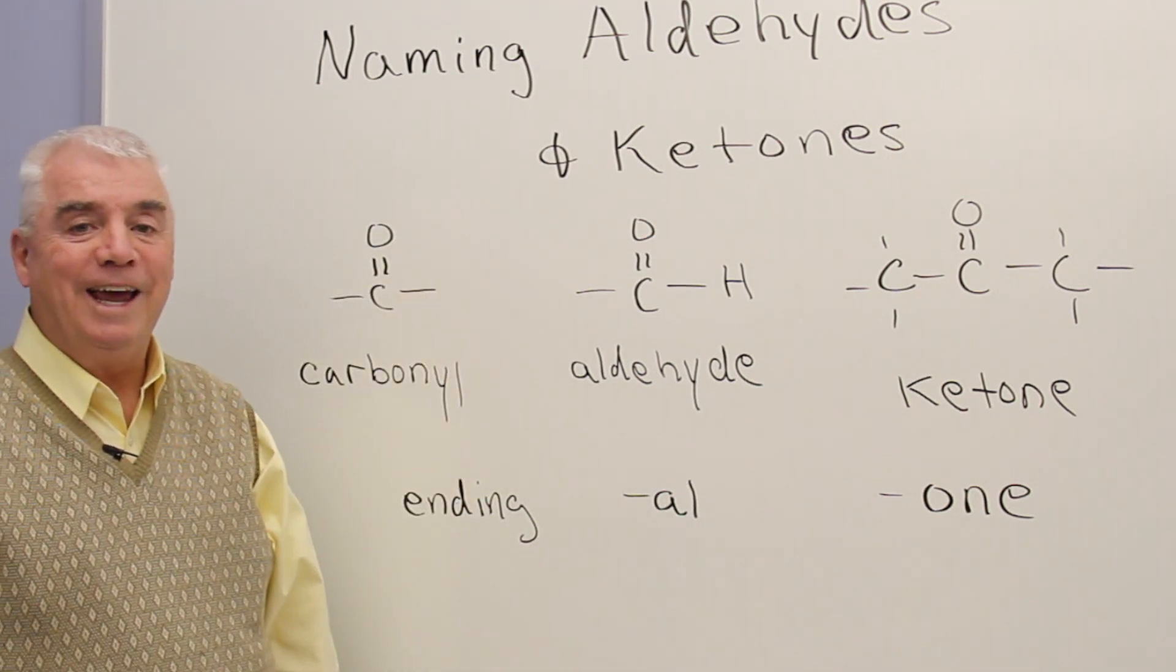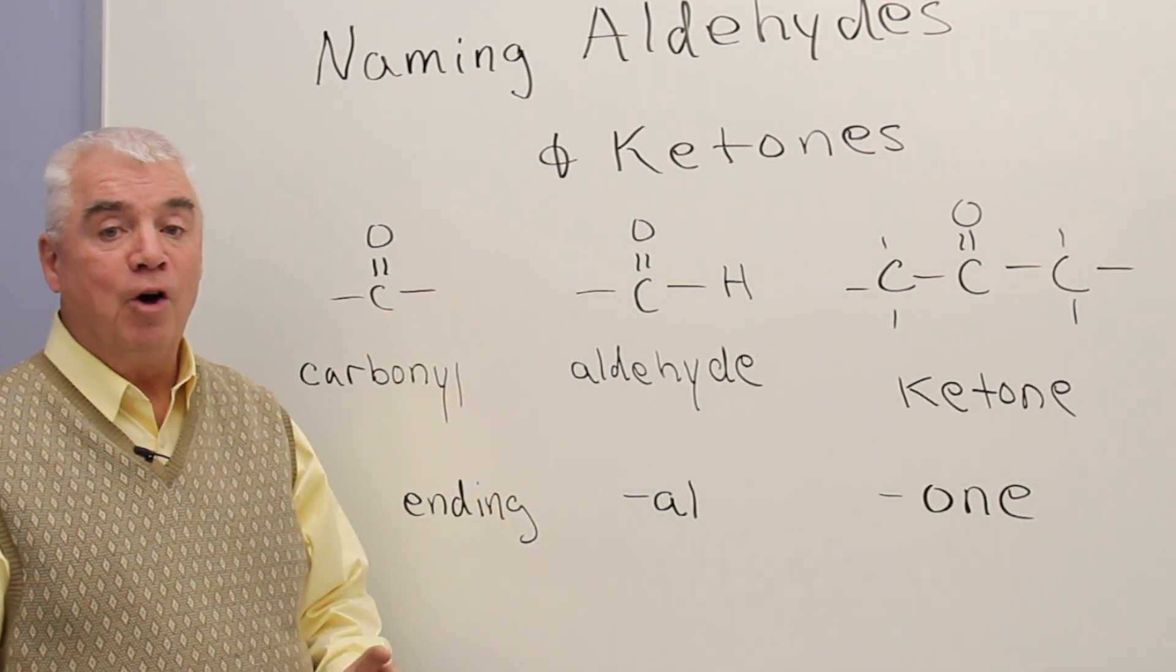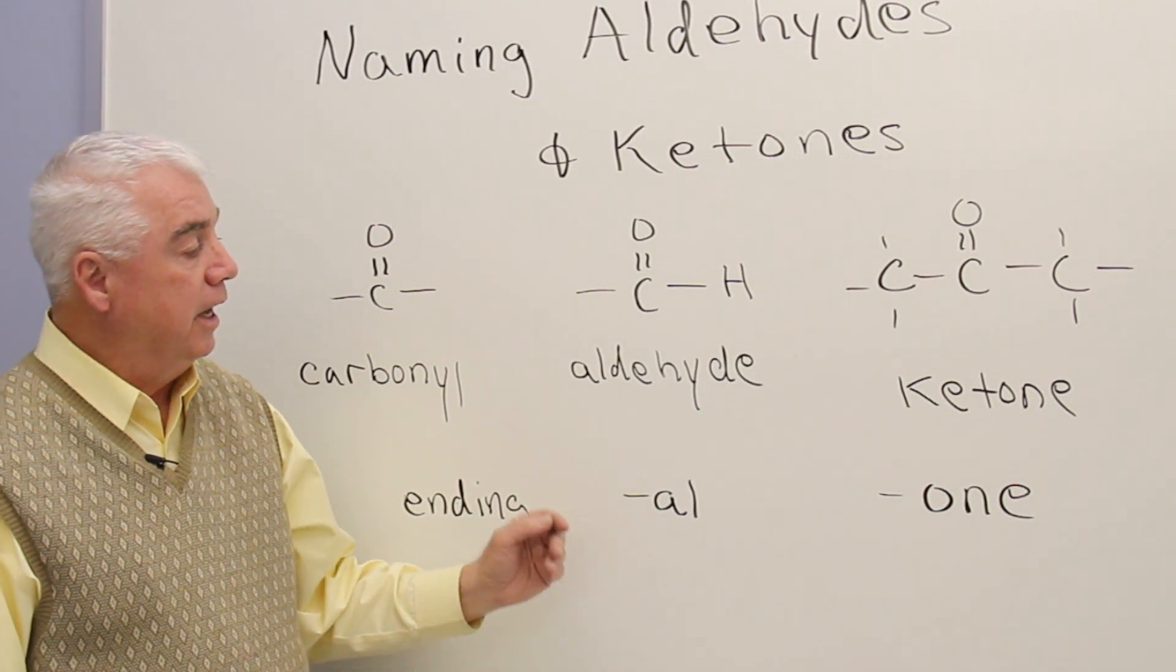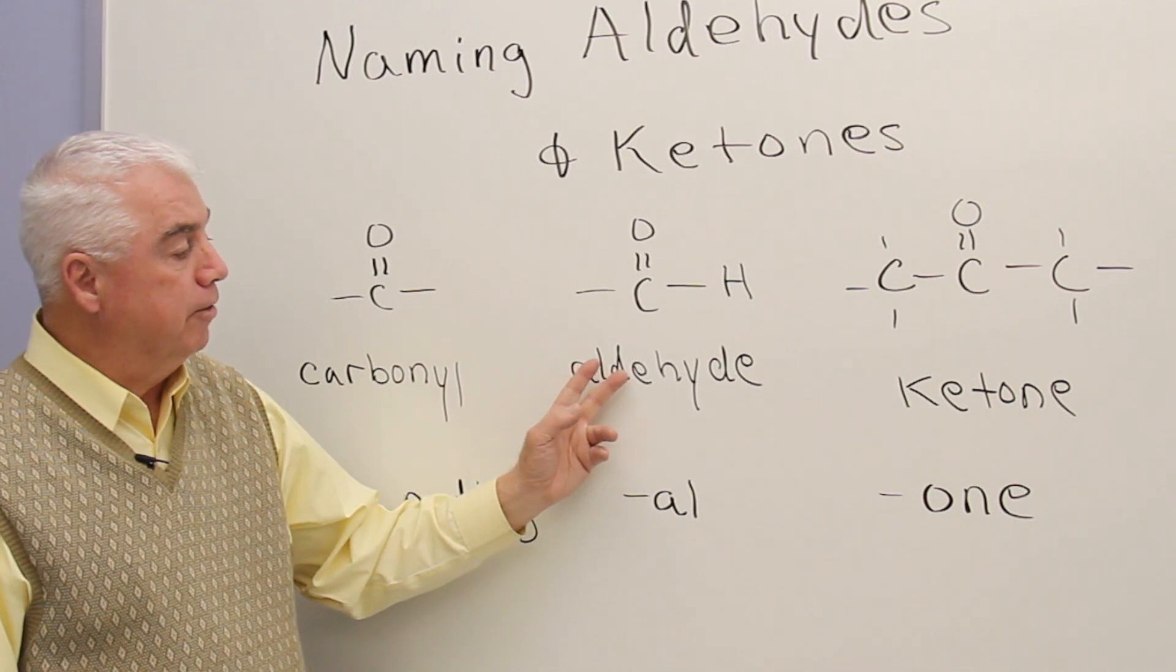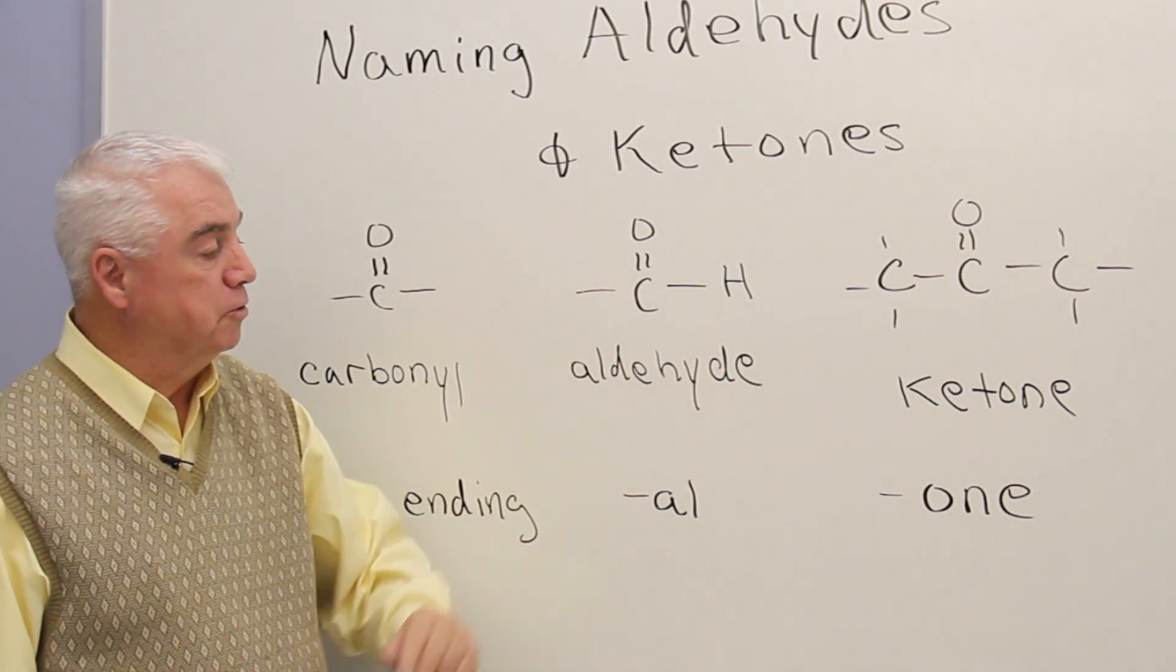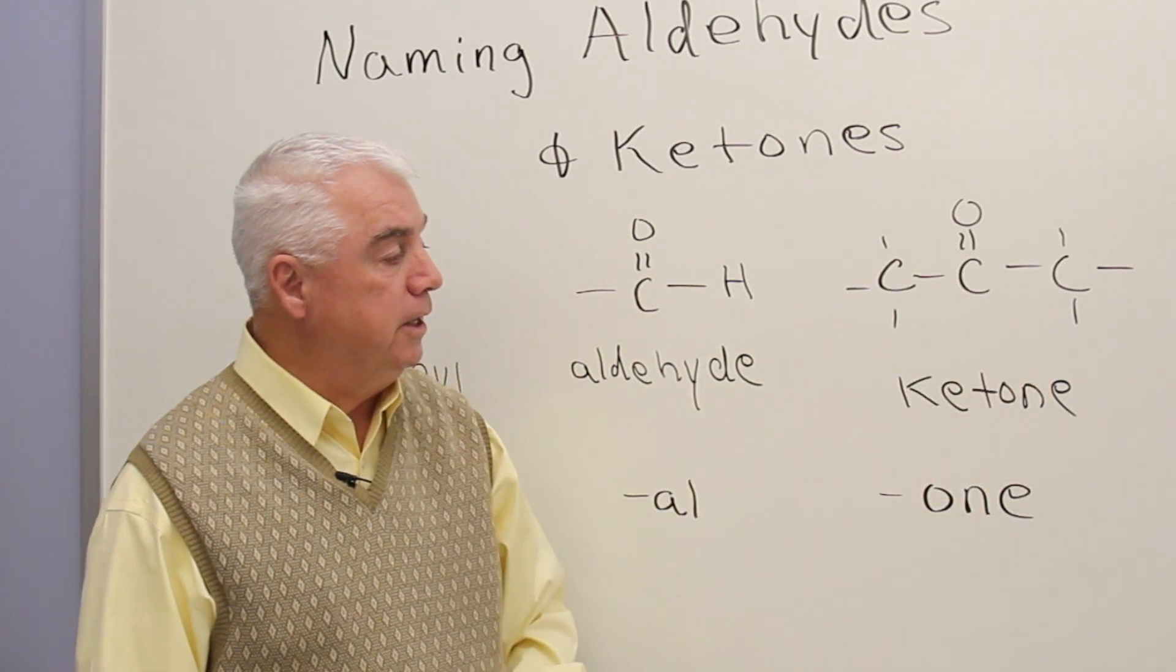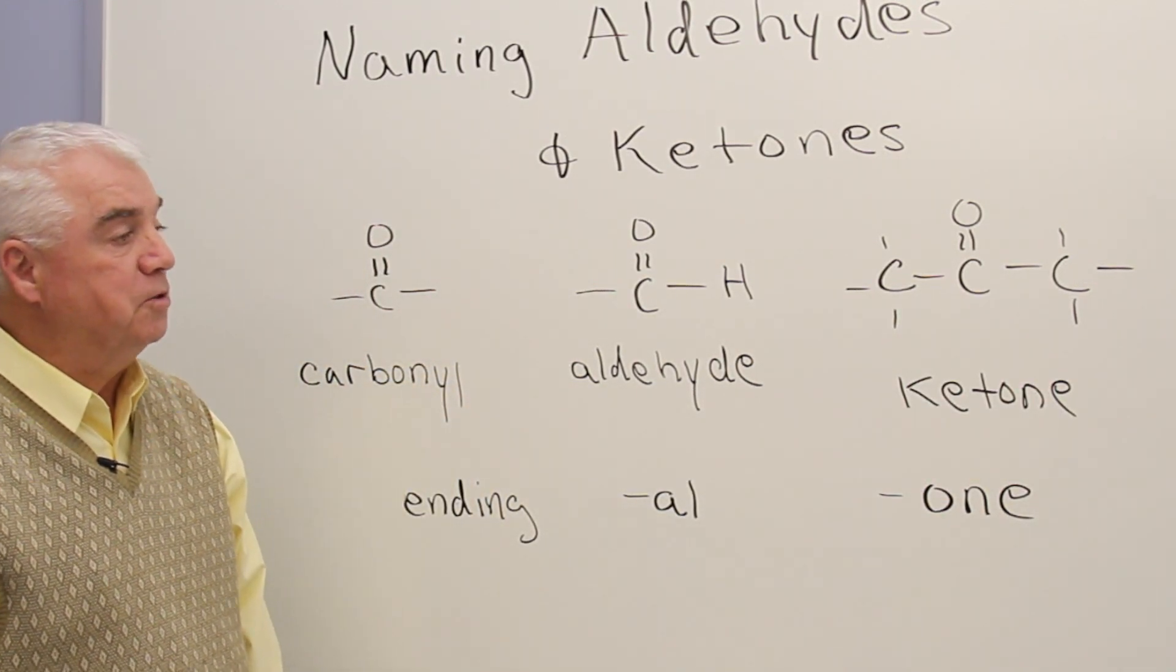And you're probably old hands at naming by now. You know that we're going to find the longest chain. We'll change the ending to indicate the functional group that's present. Aldehydes end in -al. Typically, we've gone for the ending of the molecule or the ending of the functional class. But in aldehyde, it would be a little strange, and so they went with the first two letters instead. Ketones, we're back to our typical system where the ending O-N-E is the ending for the IUPAC system.